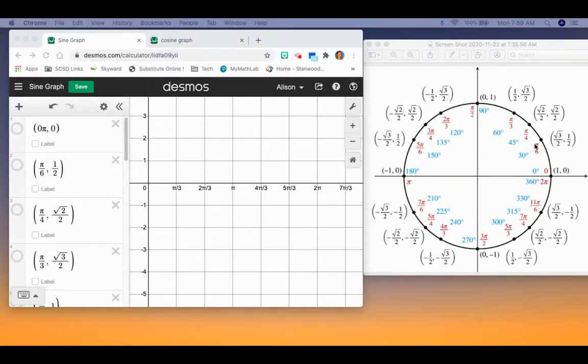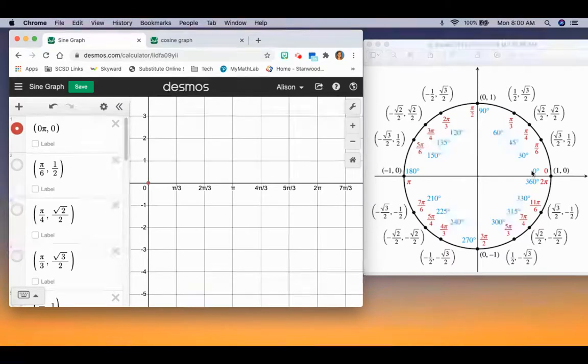We know that when we're talking about sine on the unit circle, it's just our y-values because sine is opposite over hypotenuse, but on the unit circle the hypotenuse is one all the way around. So sine is just our y-value. I've plotted these points where our x-axis is our angles. Our first angle is zero pi, and our y-value at zero pi is zero.